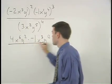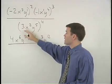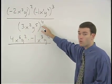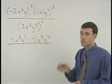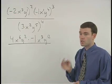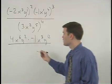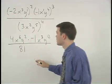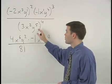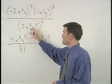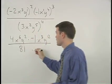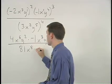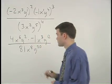In our denominator, we take our coefficient of 3 to the fourth power, which is 3 times 3 times 3 times 3, or 81, and multiply each of the exponents by 4 to get x to the 8th, y to the 20th.